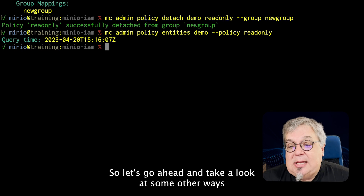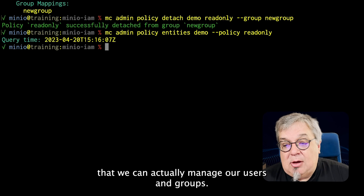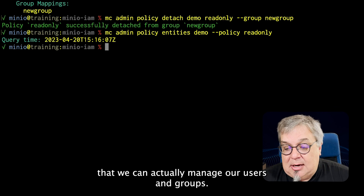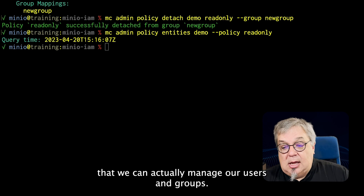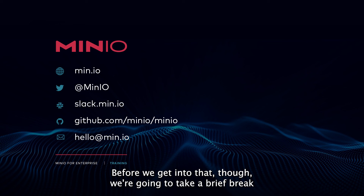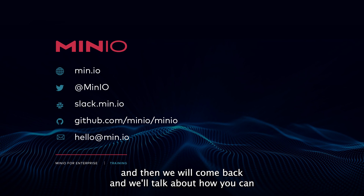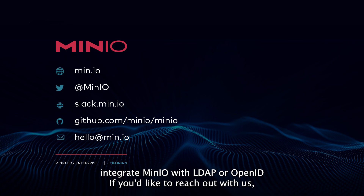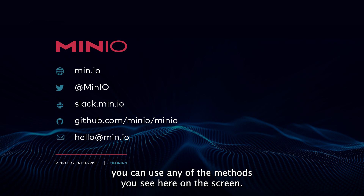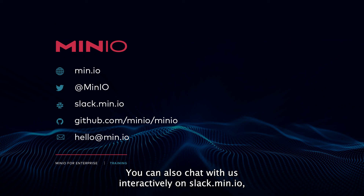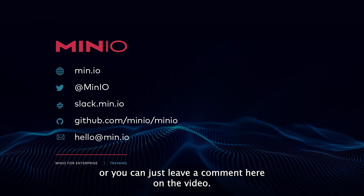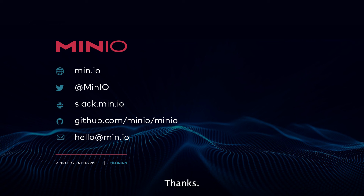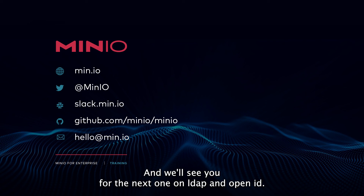Let's go ahead and take a look at some other ways we can manage our users and groups. Before we get into that, we're going to take a brief break and then come back and talk about how you can integrate MinIO with LDAP or OpenID. If you'd like to reach out, you can use any of the methods on screen, chat with us interactively on slack.min.io, or just leave a comment on the video. Thanks and we'll see you for the next one on LDAP and OpenID.